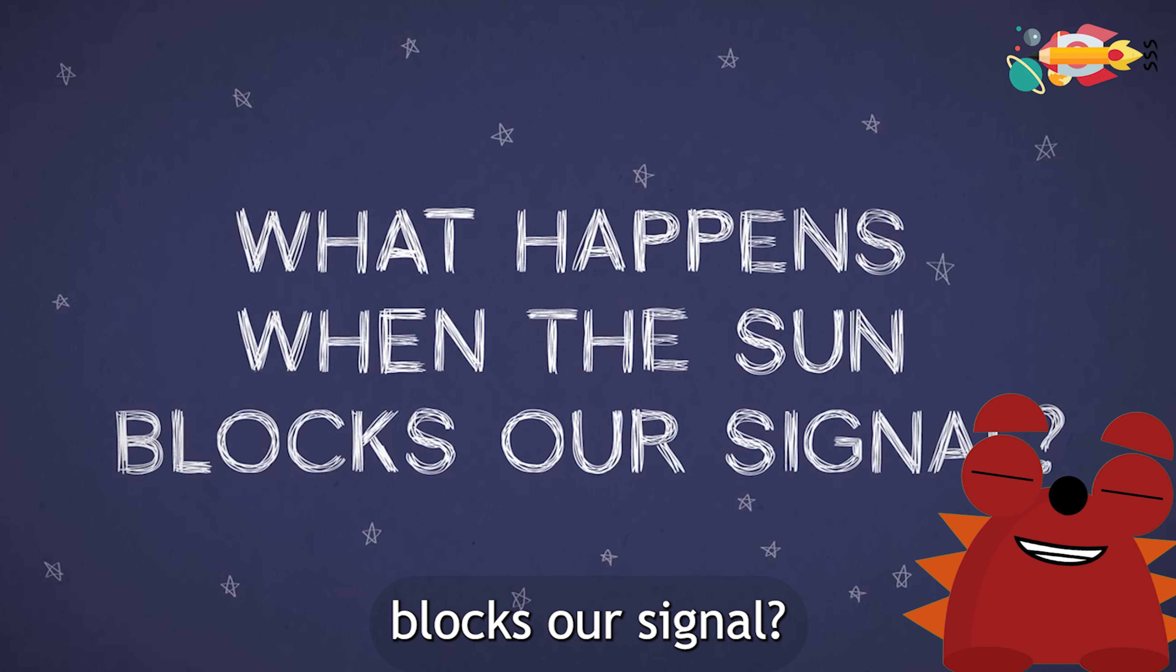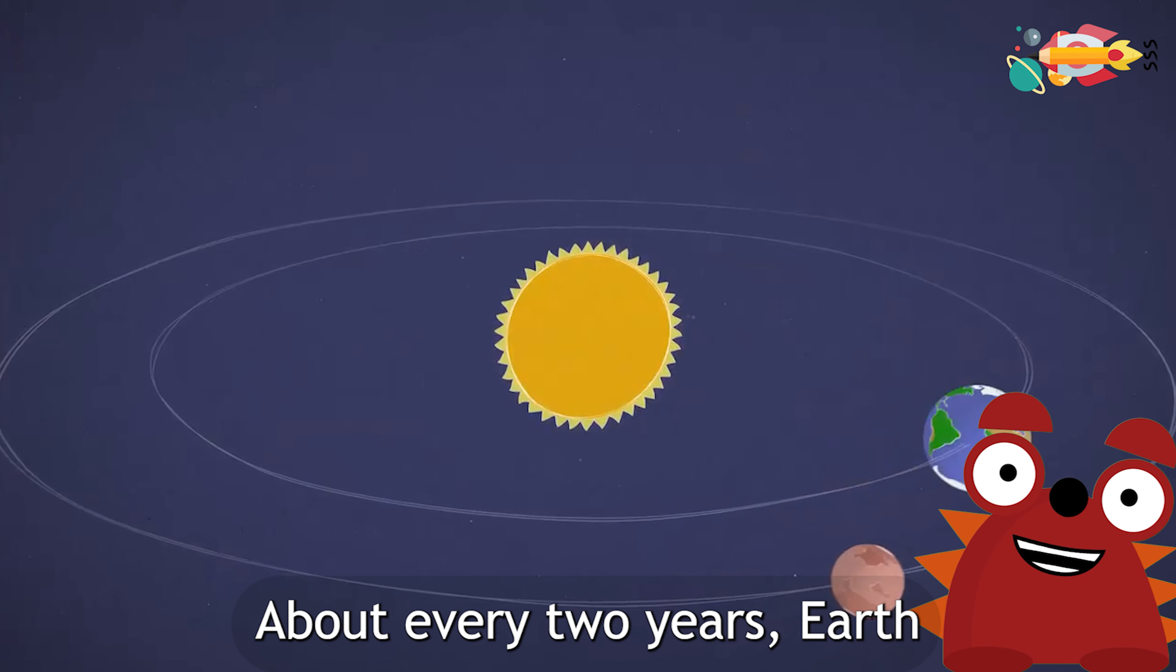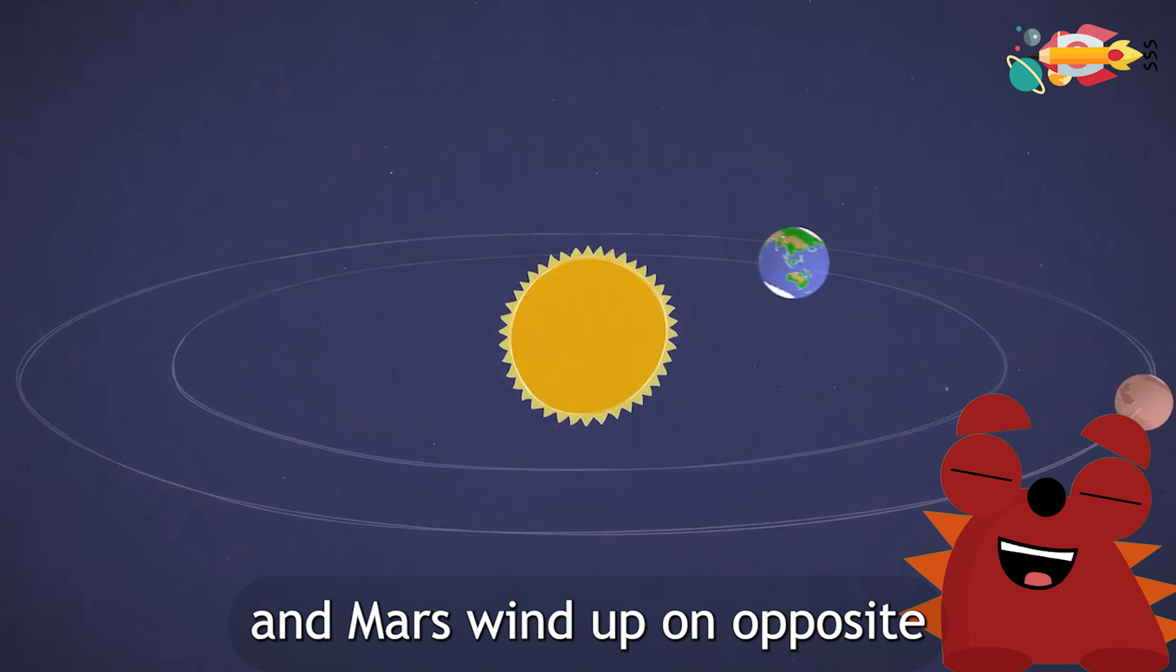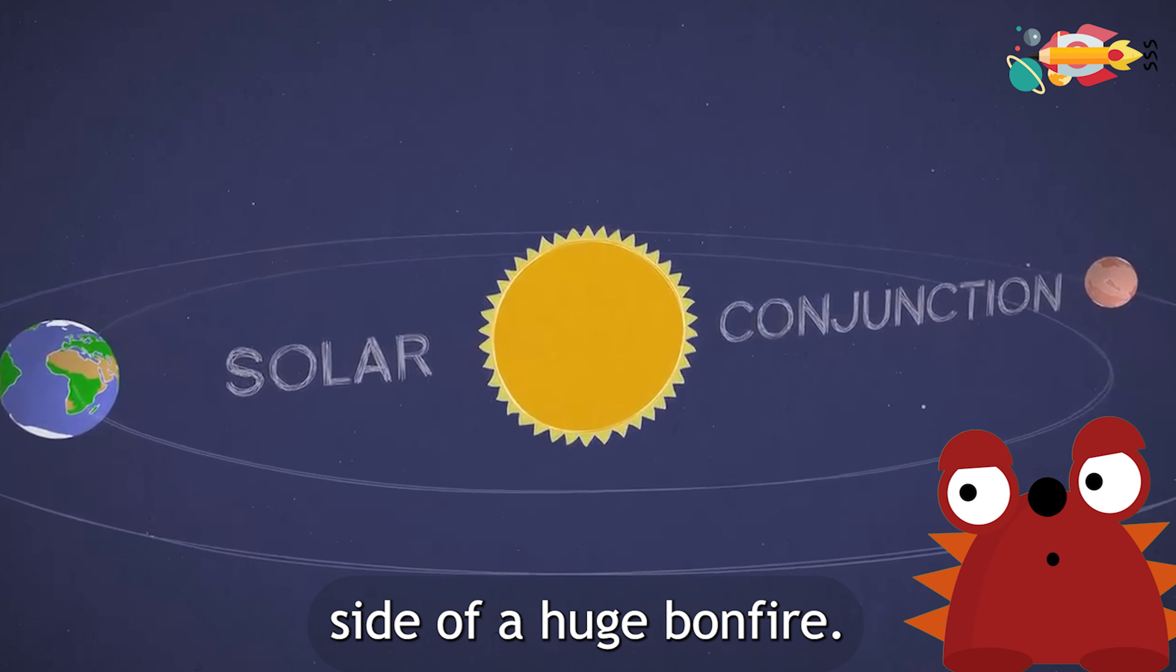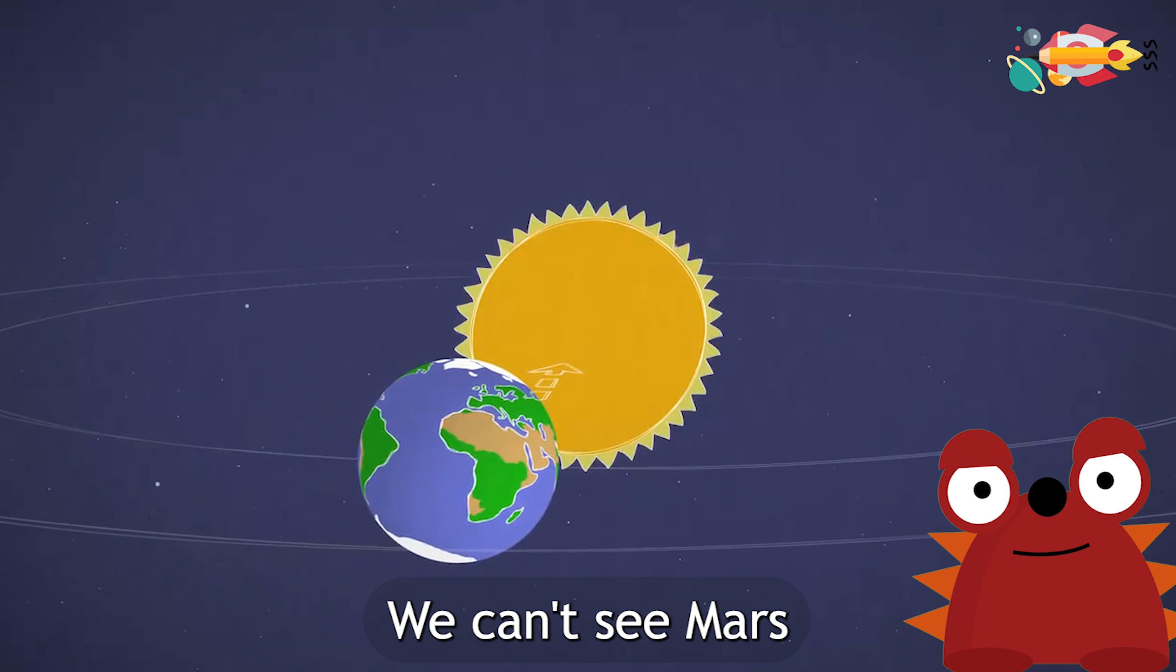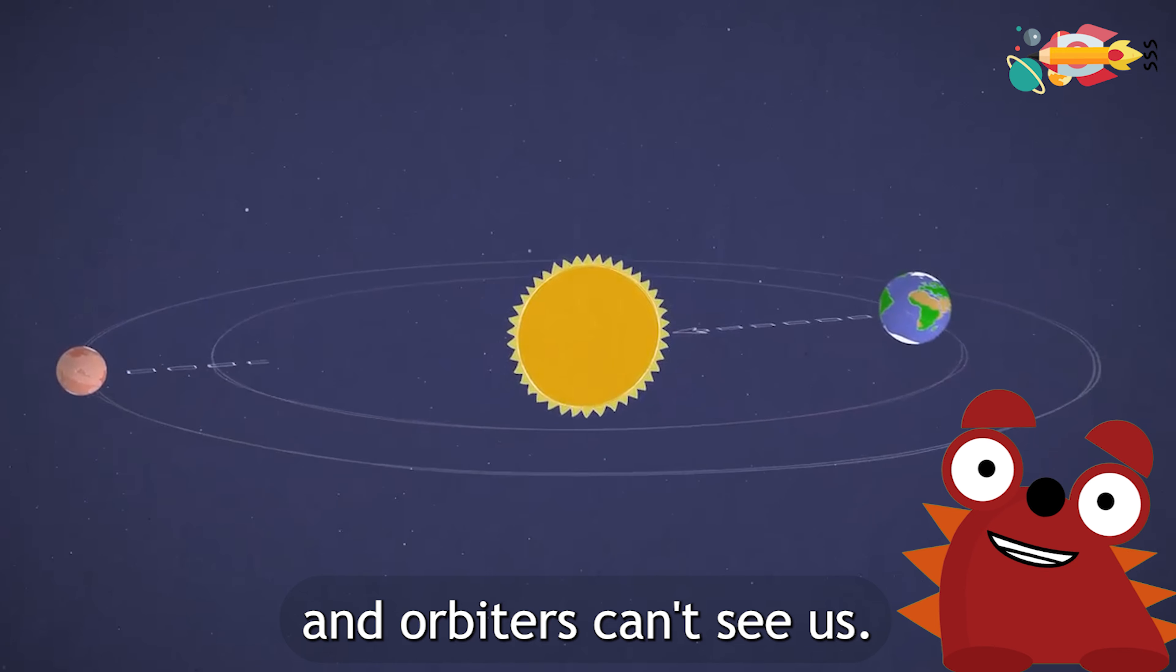What happens when the Sun blocks our signal? About every two years, Earth and Mars wind up on opposite sides of the Sun. That's called solar conjunction. It's like being on either side of a huge bonfire. We can't see Mars, and our landers, rovers, and orbiters can't see us.